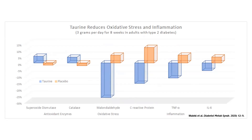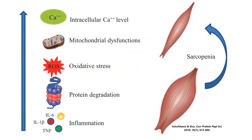Over time, the buildup of oxidative stress causes mitochondria to simply terminate their lives and the life of the cell containing them. The reduction in mitochondrial energy production and increase in cell death as a result of taurine deficiency is an established cause of heart failure and other cardiovascular diseases. It's also believed to play a role in the loss of muscle mass, strength, and function with aging, a condition called sarcopenia.